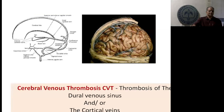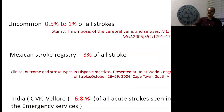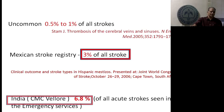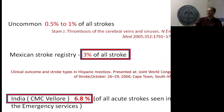Cerebral venous thrombosis can be either thrombosis of the neural venous sinuses and/or the cortical veins on the surface of the brain. It's a rather uncommon cause of strokes in the West, but in some countries it is more common — in the Mexican stroke registry it constitutes almost 3% of all strokes. Our data from CMC, similar to NIMHANS and other parts of South India, shows it constitutes almost 7% of all acute strokes seen in emergency services.